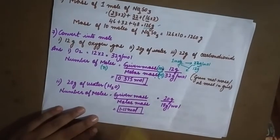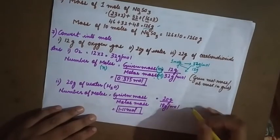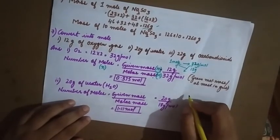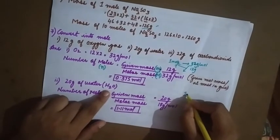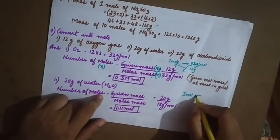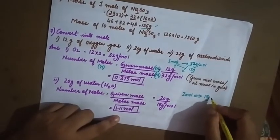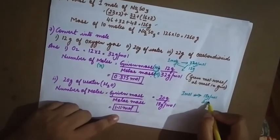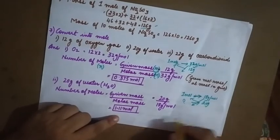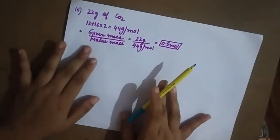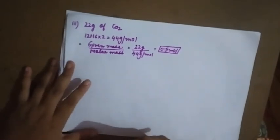For 20 g of water: calculate molecular mass of H₂O — hydrogen 1 × 2 = 2, plus oxygen 16; molecular mass = 18 g/mol, so 1 mole = 18 g. Cross-multiplying gives the number of moles for 20 g. Do the same for carbon dioxide, or use the formula — given mass divided by molar mass — to calculate moles. Work out more problems for better understanding.